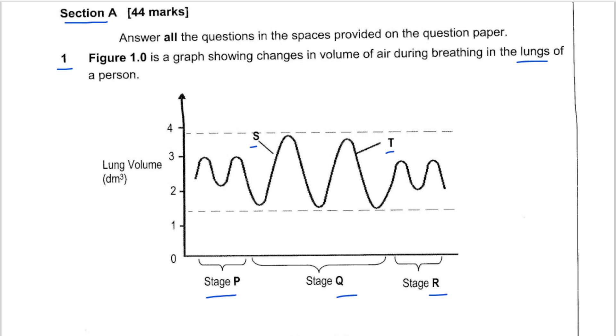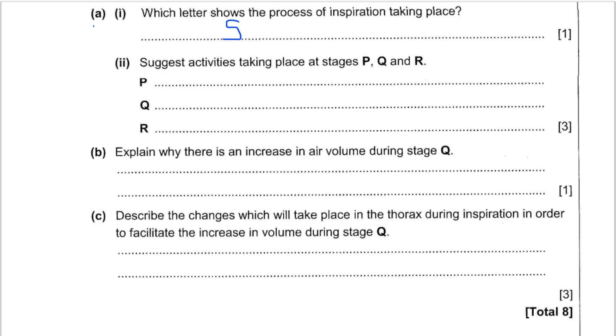The first part A, which letter shows the process of inspiration taking place? During inspiration, we are taking air, so meaning that the volume is basically going to increase. We can see that here on the graph, we can see the volume going up, so the volume is increasing, meaning that here the answer is S.